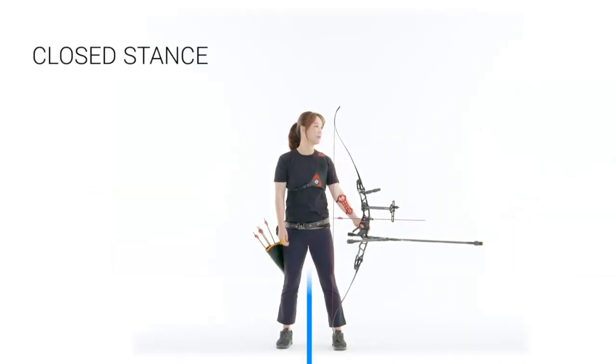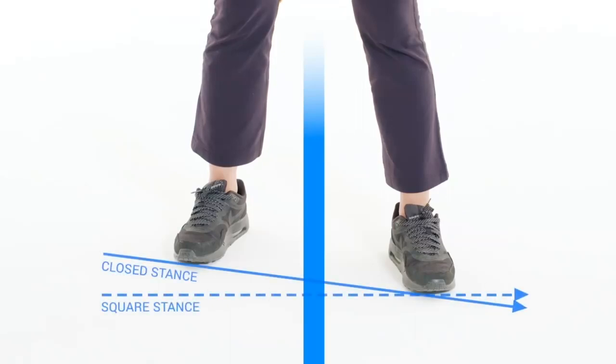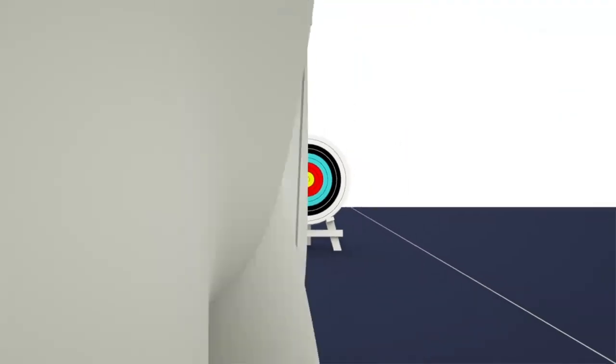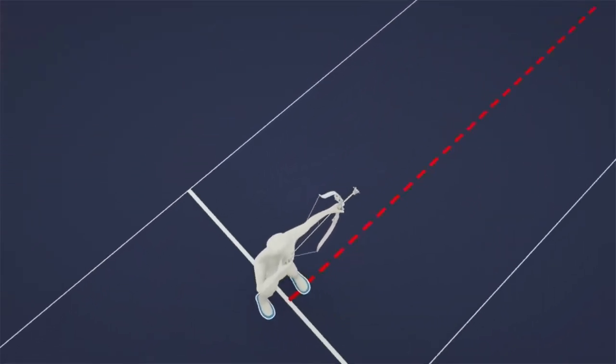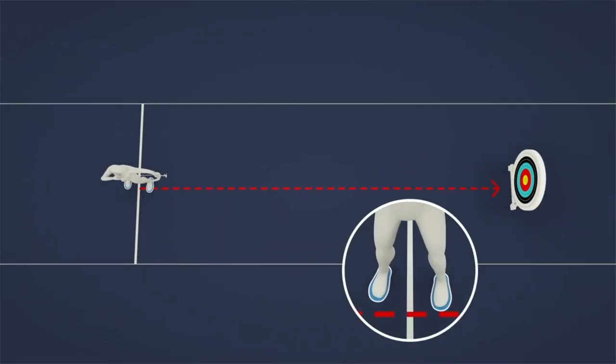Closed stance is the opposite placement compared to open stance and is rarely used in target archery. This stance forces archers to push their hips forward, allowing them to maintain posture and avoid movement in any direction.